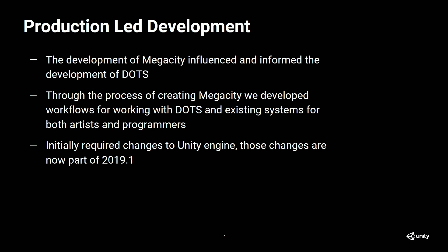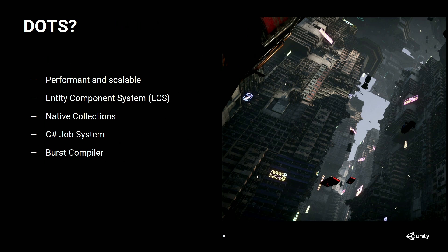Through the process, we're creating workflows not just for programmers — because it's obviously a scripting system — but also for artists: how are artists going to be able to work with content in this new way of representing objects in the world? As we were getting ready for the October 2018 release, we had to make some changes to the engine core — the C++ part of Unity — to make this possible. Those changes are now integrated into 2019.1, which is out now in beta 8, and that's publicly available.